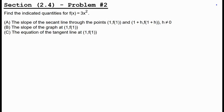Part A says to find the slope of the secant line through the points (1, f(1)) and (1 plus h, f(1 plus h)), where h is not equal to 0.